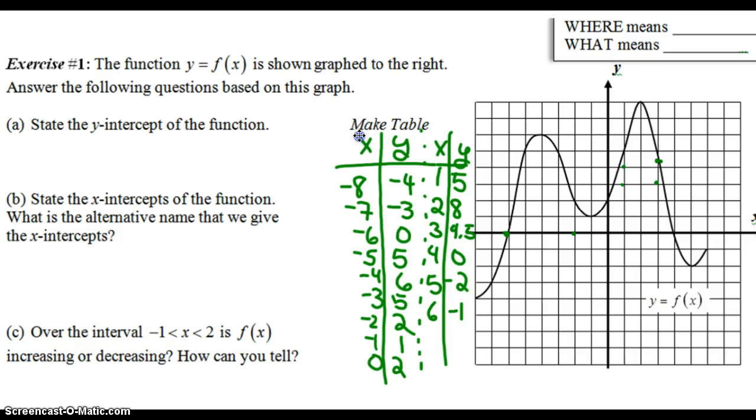First, state the y-intercept. So ways to look at this: visually, here's my y-axis. Where is it hitting? Right there at the value of 2. Now, if you're blessed with a table instead, we can see at that point the x value is 0. So you come to your table and you find the 0, 2. Either way, you can do it.